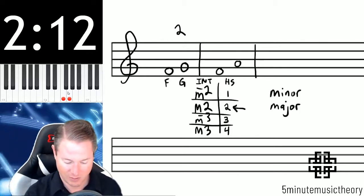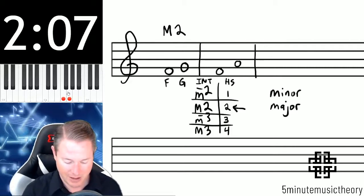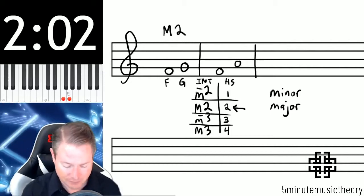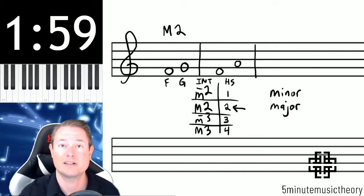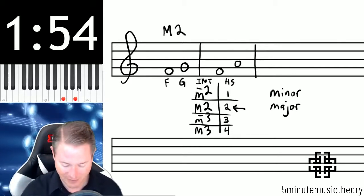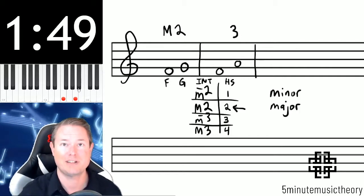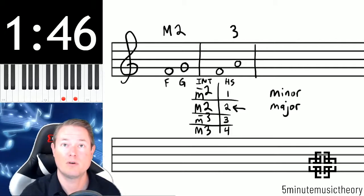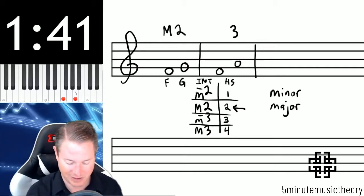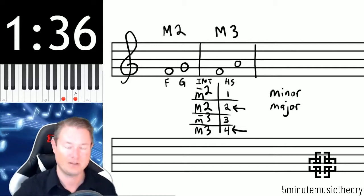The next interval here, we have an F and we have an A. So the distance between these—let's clear this—F, A: F, G, A is the distance of three, so the size of that interval is a third. And then if we count the half steps between them, let's go back to our piano keyboard and count from F: one, two, three, four half steps. The third that's worth four half steps is a major third. So that's a major third.